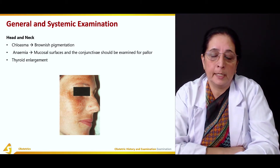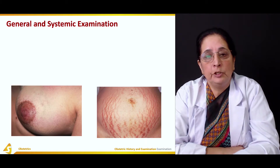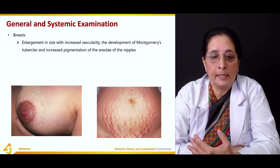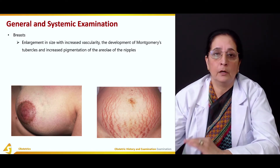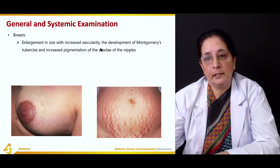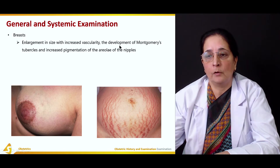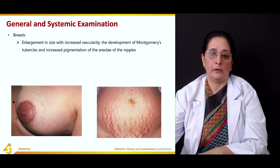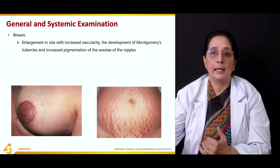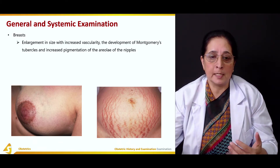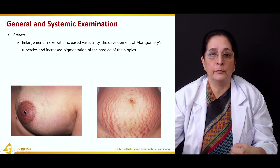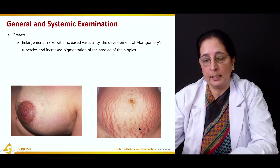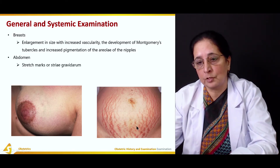Thyroid enlargement is also checked in the general and systemic examination. Look for changes in the breast: enlargement in size with increased vascularity, development of Montgomery's tubercles, and increased pigmentation of the areola of the nipples — all very common in pregnancy.